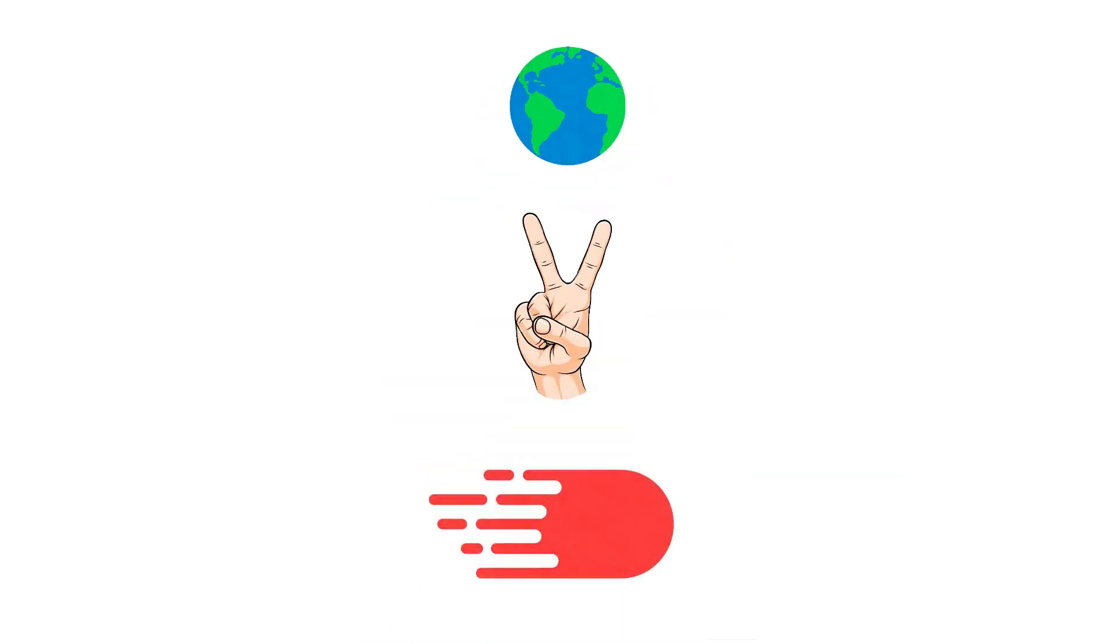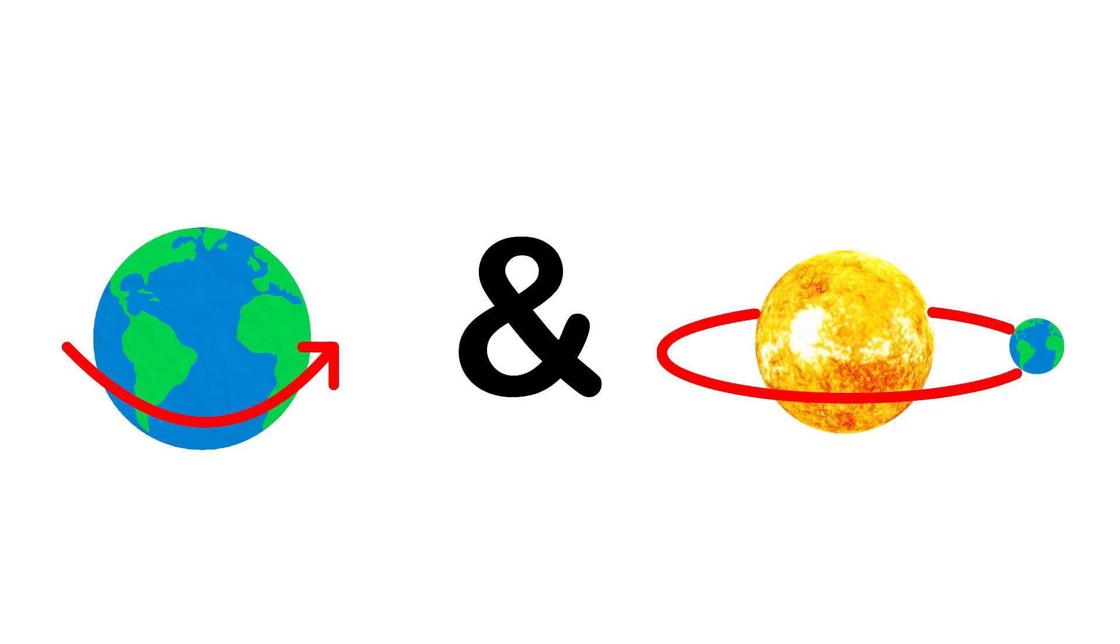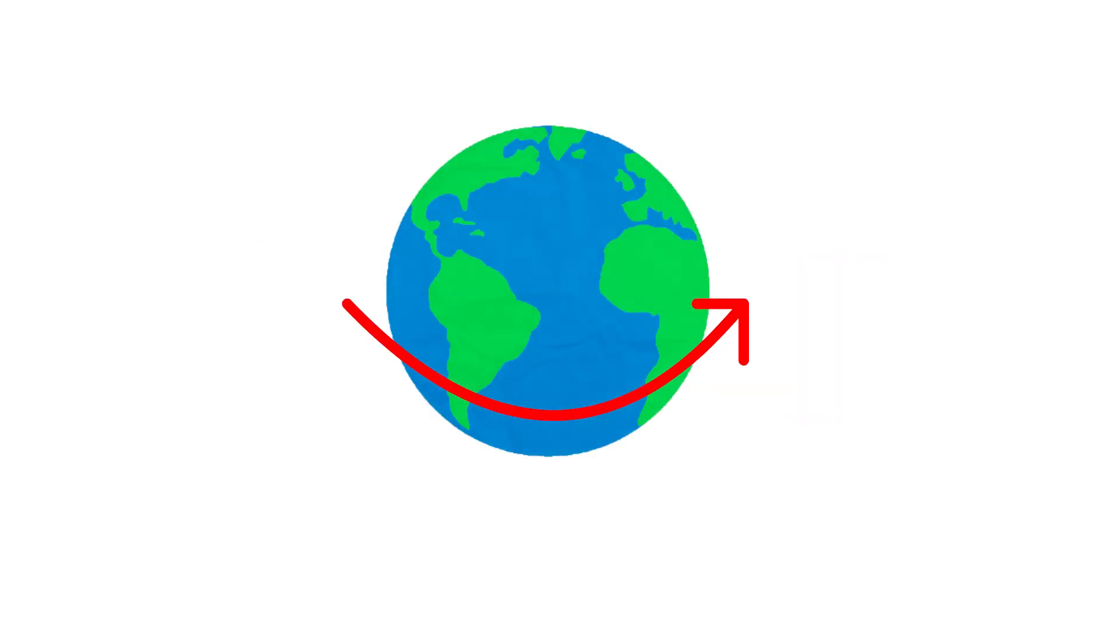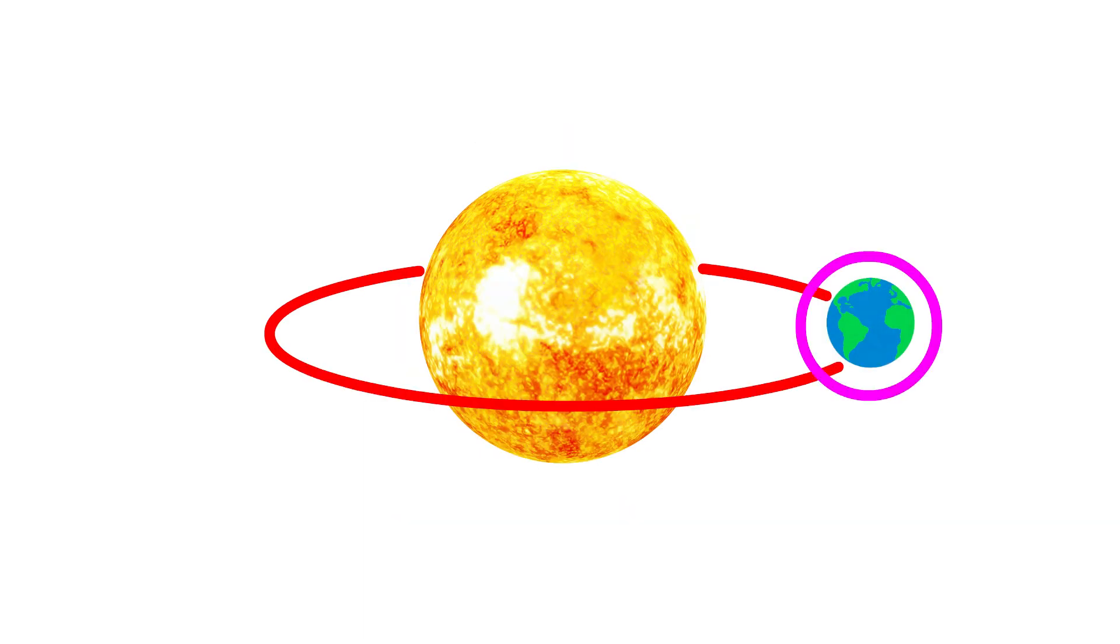As you know, the earth has two types of motions: rotation and revolution. Rotation is the movement of the earth on its axis. The movement of the earth around the sun in a fixed path or orbit is called revolution.